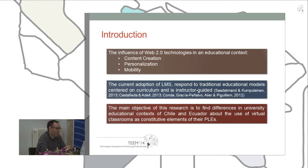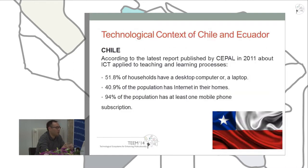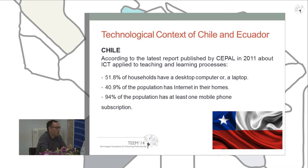What is the situation in each country? In Chile, according to the latest report published by CEPAL in 2011 about ICT applied to the teaching and learning process, 51% of households have a desktop computer or laptop, 40% of the population has internet access in their homes, and 94% of the population has at least one mobile subscription.